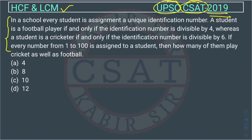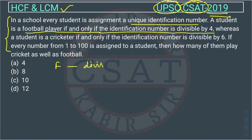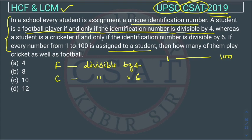In a school, every student is assigned a unique identification number. A student is a football player if and only if the identification number is divisible by 4. A student is a cricketer if and only if the identification number is divisible by 6. If every number from 1 to 100 is assigned to a student, then how many of them play both cricket and football?